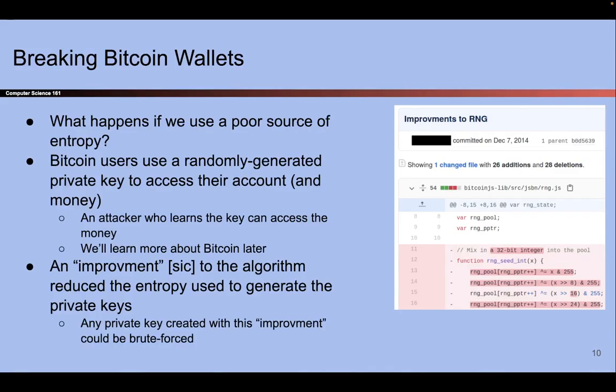As a real-world example of what happens if you use a low-entropy source, there's a code base used in Bitcoin where someone made a commit to the repository titled 'improvments to the random number generator' — that's how they spelled it. Apparently this 'improvment' caused the random number generation algorithm to have less entropy, meaning the attacker is now more able to guess the private keys generated with this code. If the attacker can predict the private key, they can steal your Bitcoin and all security is lost. So perhaps it was not much of an improvment after all.